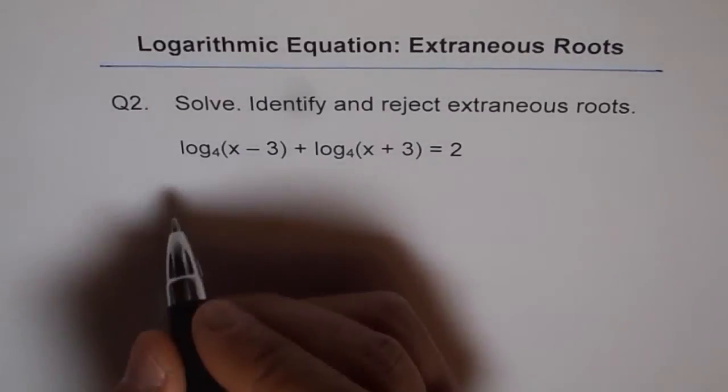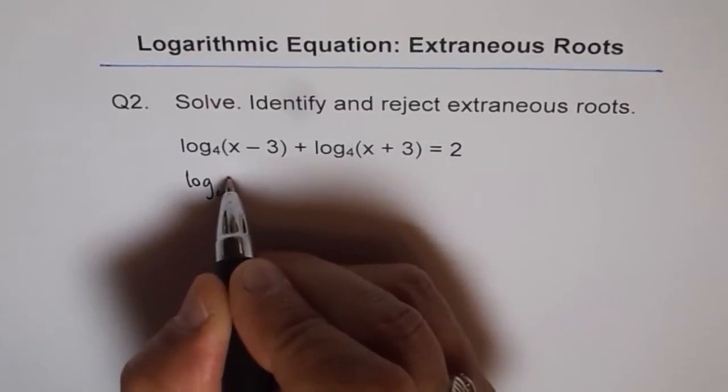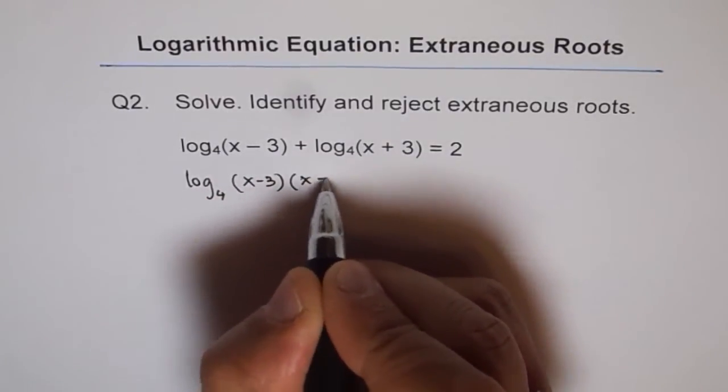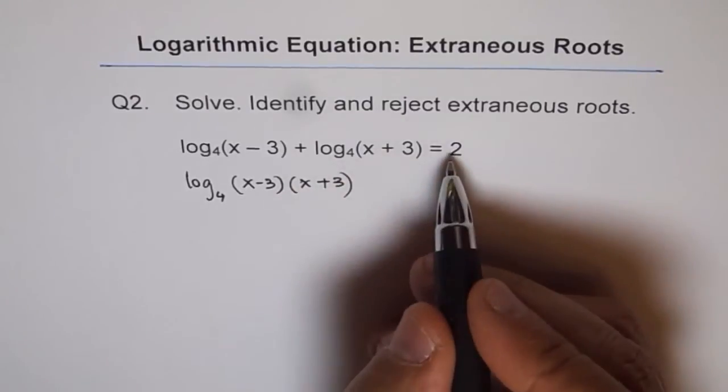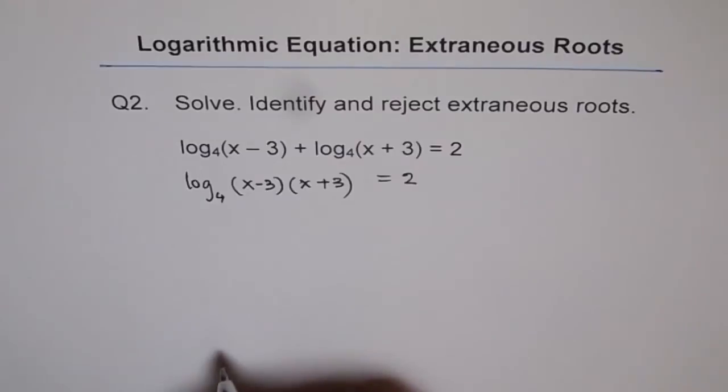Let's combine these two terms using our product rule. So log₄[(x - 3)(x + 3)] = 2.